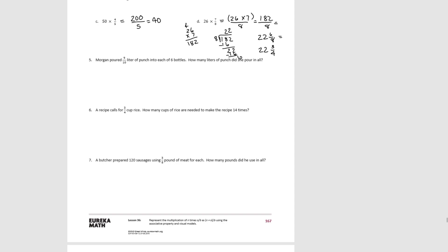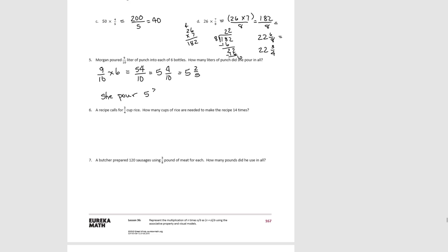For number 5, Megan poured 9/10 of a liter of punch into 6 bottles. How many liters of punch did she pour in all? We do 9/10 six times: 9 times 6 is 54, so 54/10. Dividing, we can get 5 wholes — 5 times 10 is 50 — with 4/10 left over, which simplifies to 5 and 2/5. She poured 5 and 2/5 liters of punch.